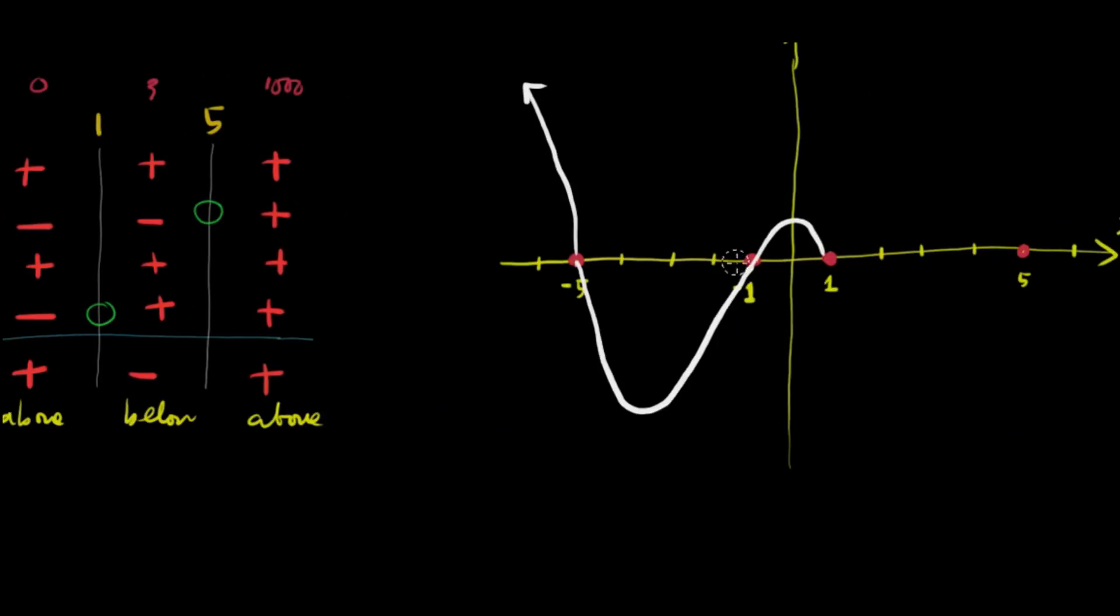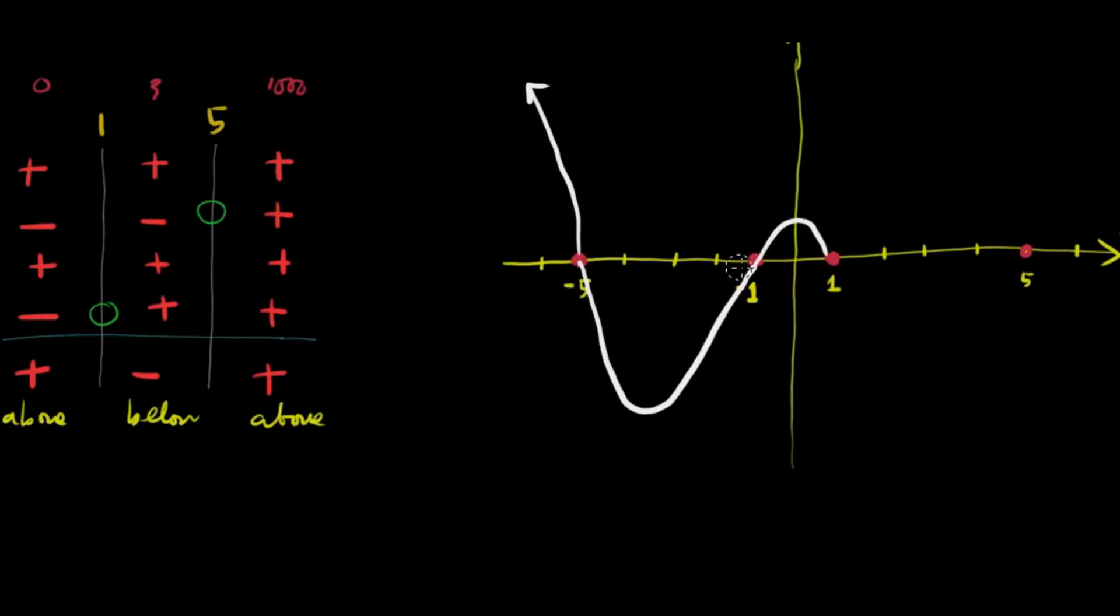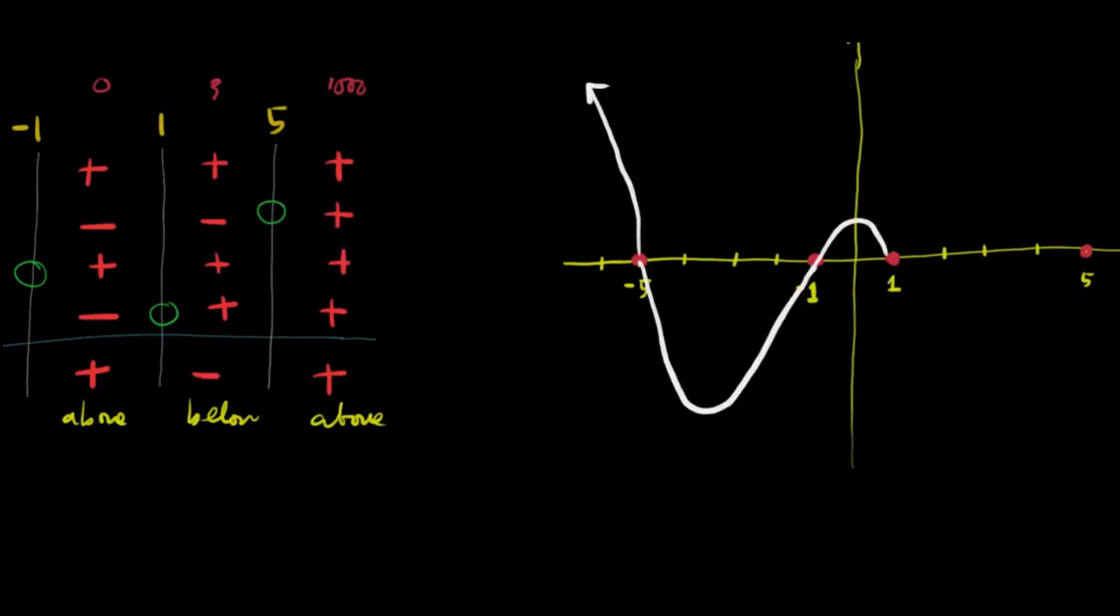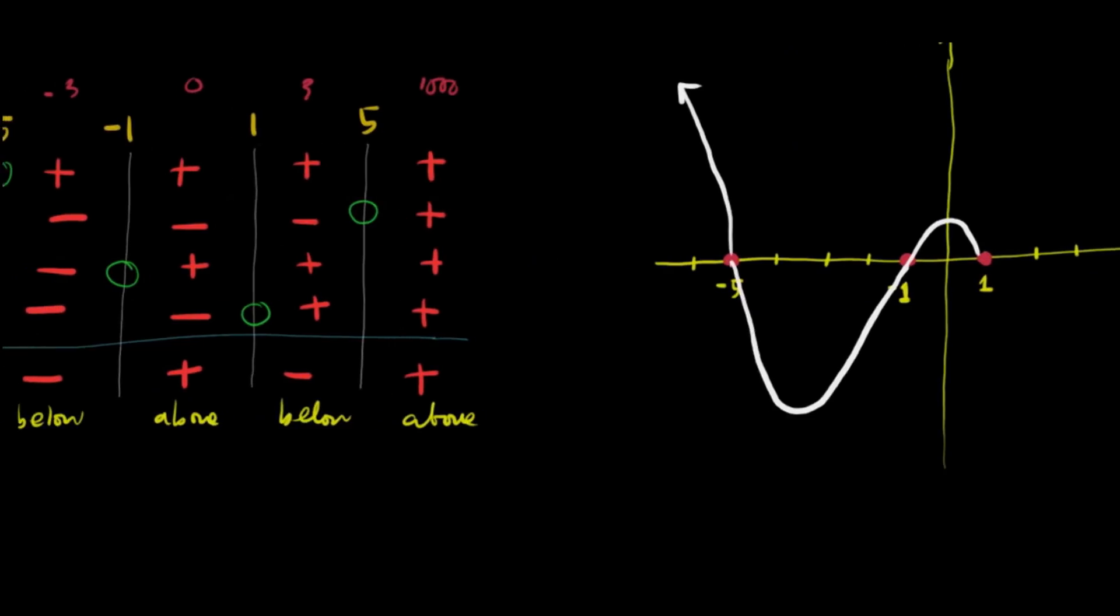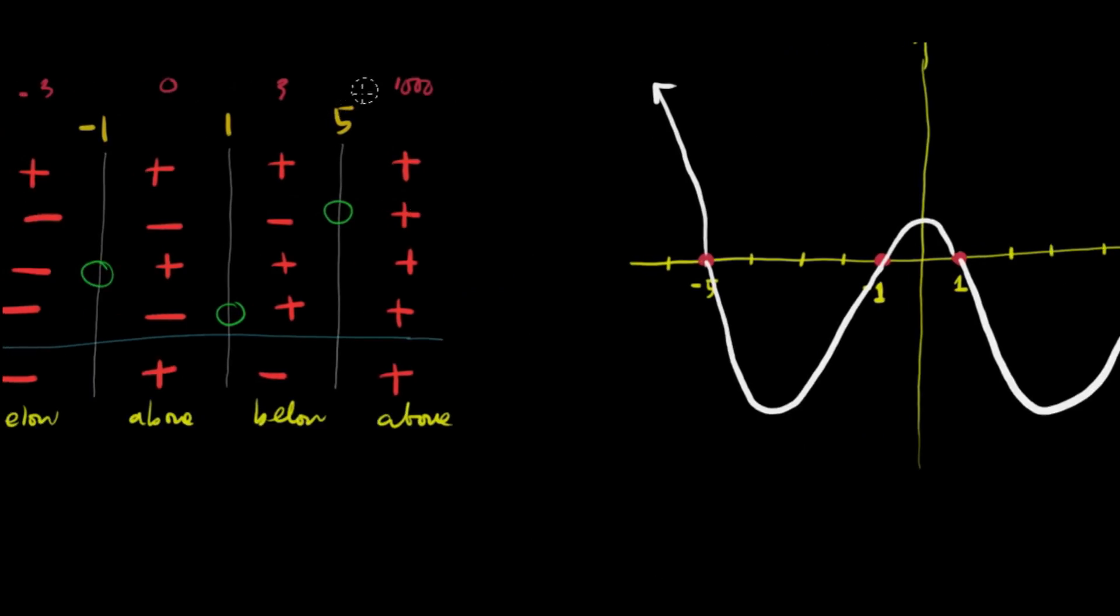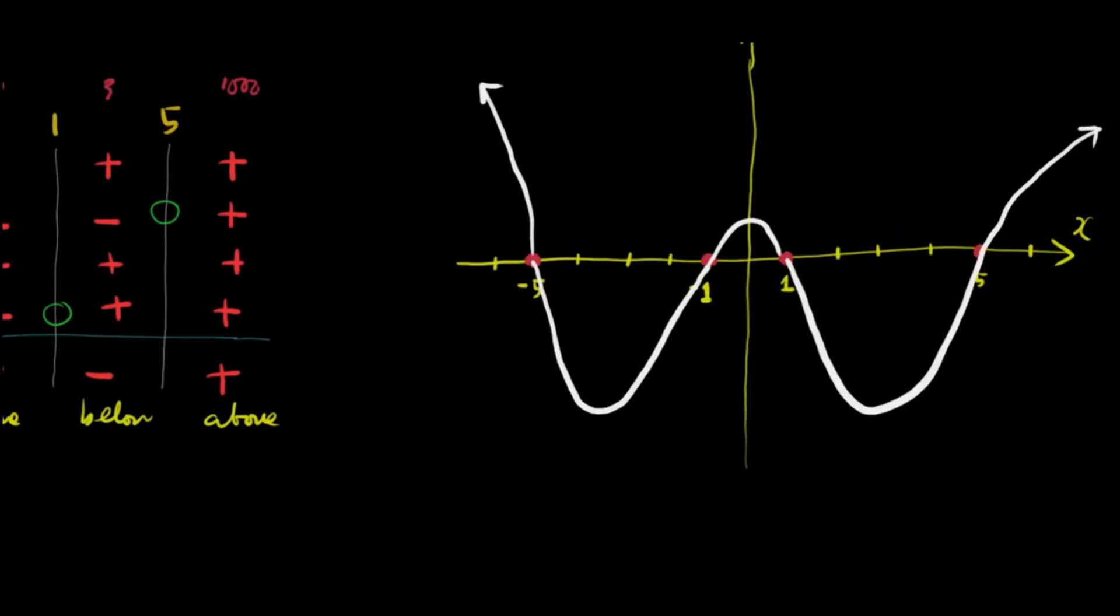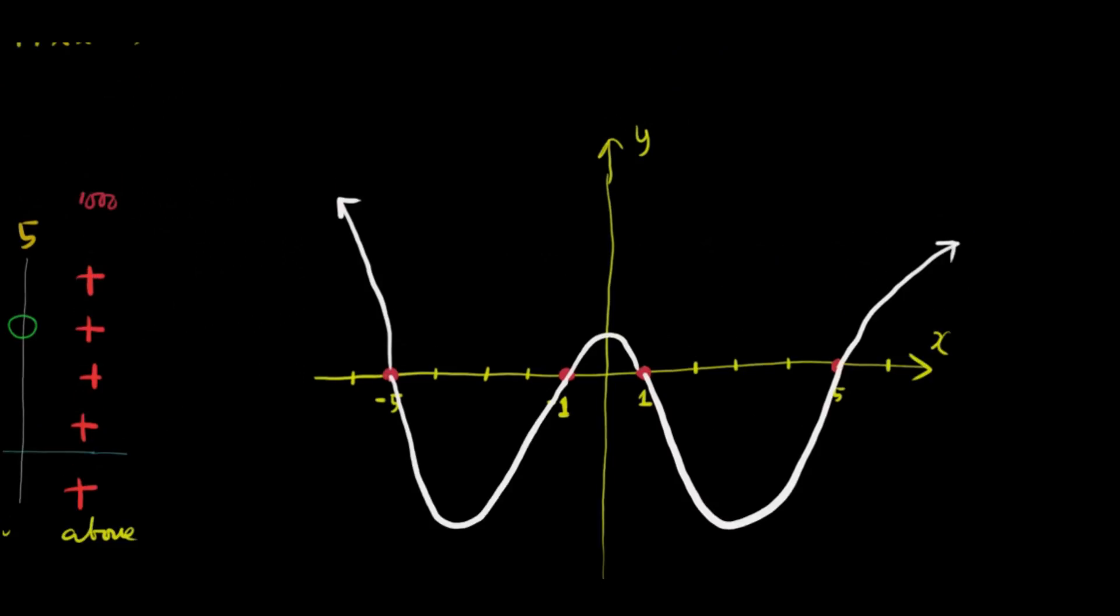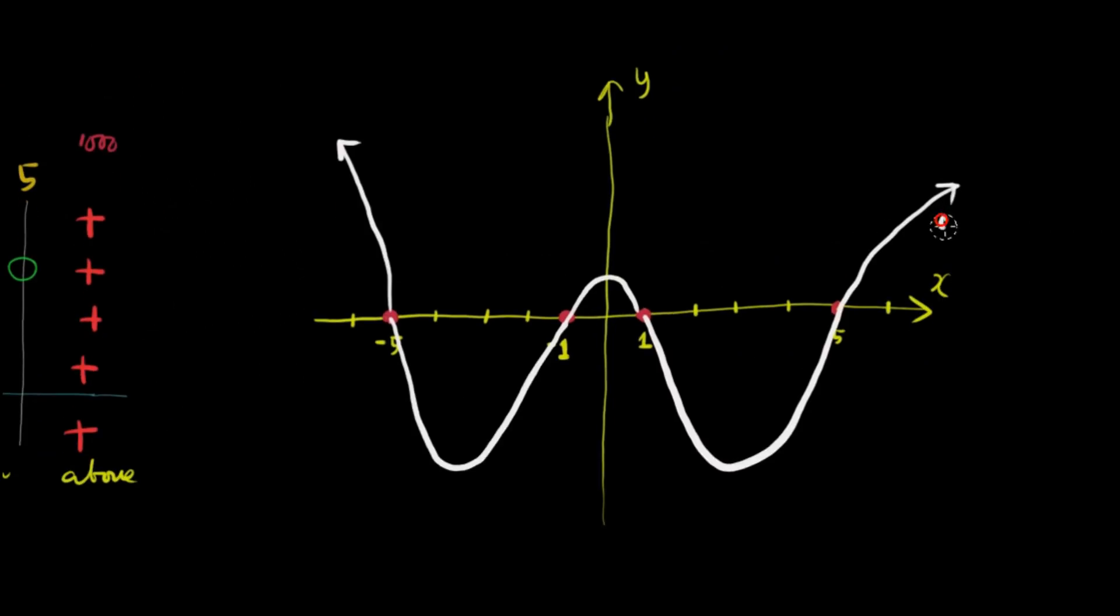And then, again, you can go ganto kataas kung gusto nyo. But for now, okay na yan. And then, from 1 to 5, it's below. So, it will go up again to 5, and then it goes to plus infinity, because it's above beyond 5. And, there you go. This is the graph of your function y.